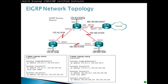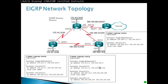Interface S0/1/0 is towards the ISP router. Router 3 has a Gigabit Ethernet interface with 192.168.1.1. The serial interface, which is DCE towards Router 1, has 192.168.10.6.